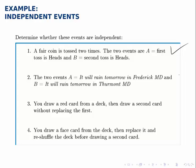The second scenario says that the two events are that it's raining in Frederick, Maryland, and that it's raining in a nearby town of Thurmont. These events are not independent because if it's raining in Frederick, it's probably also raining nearby.